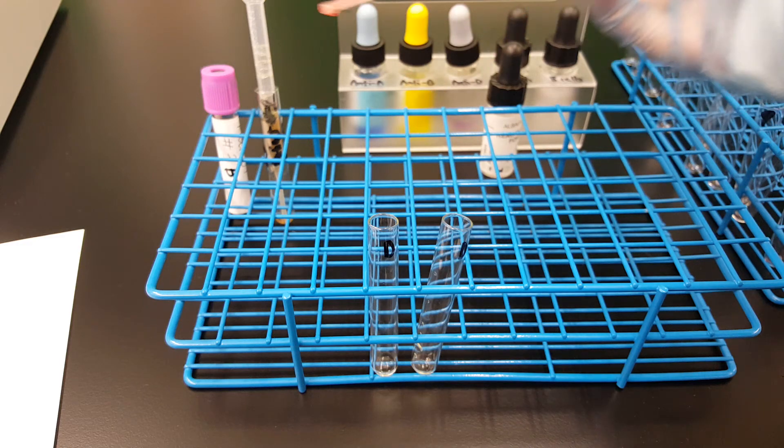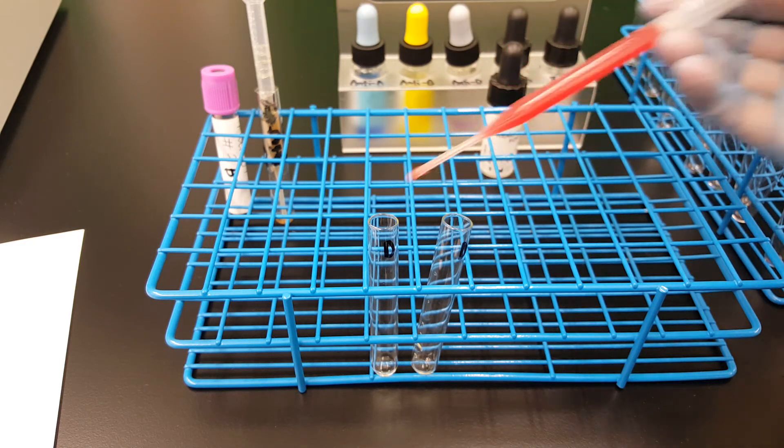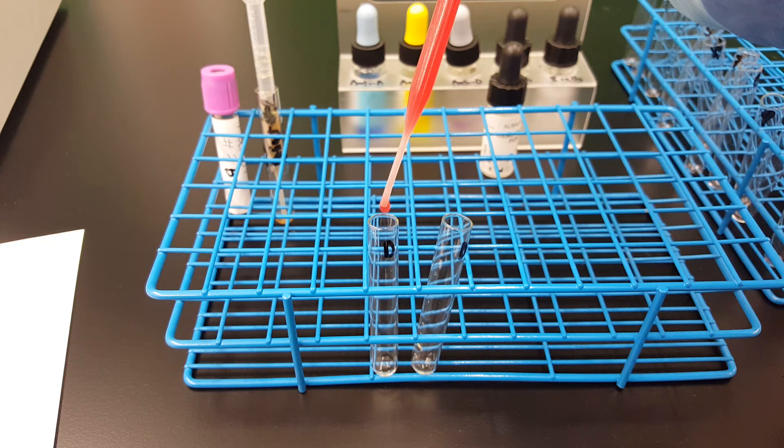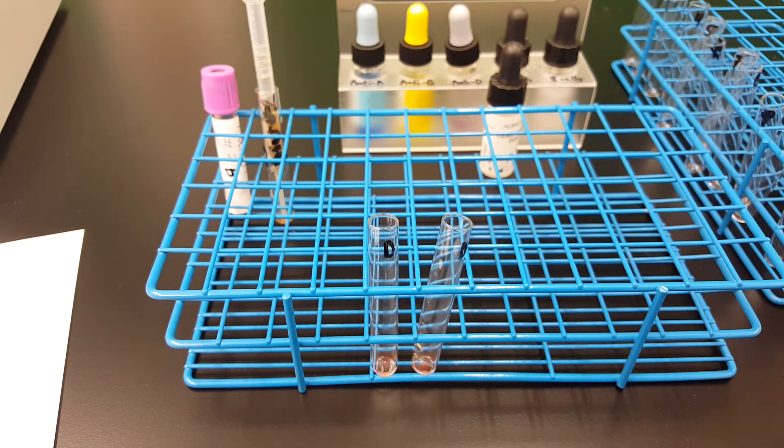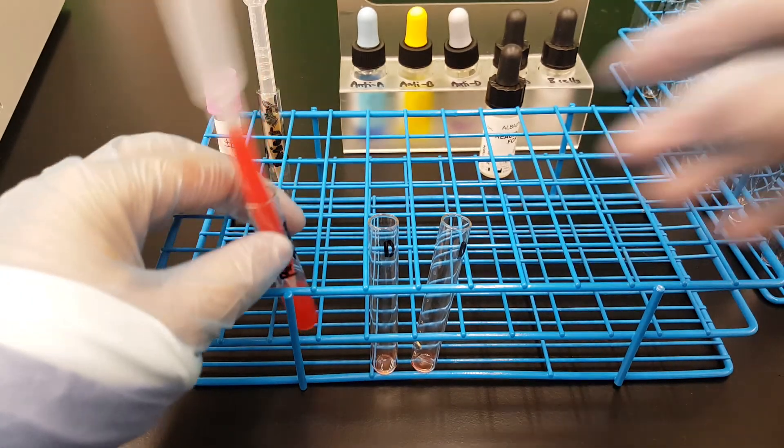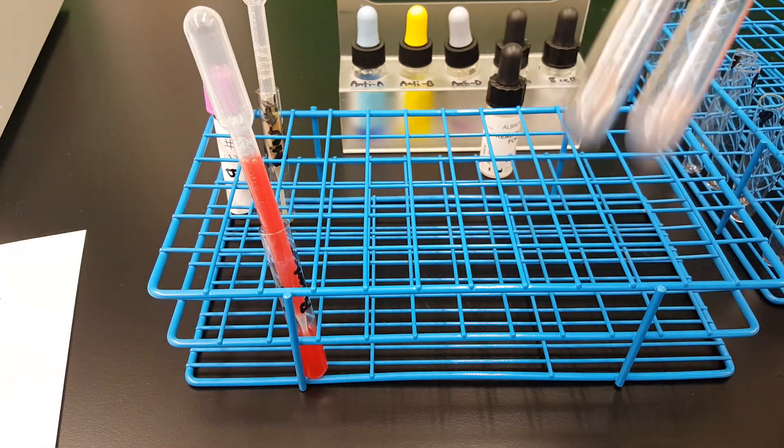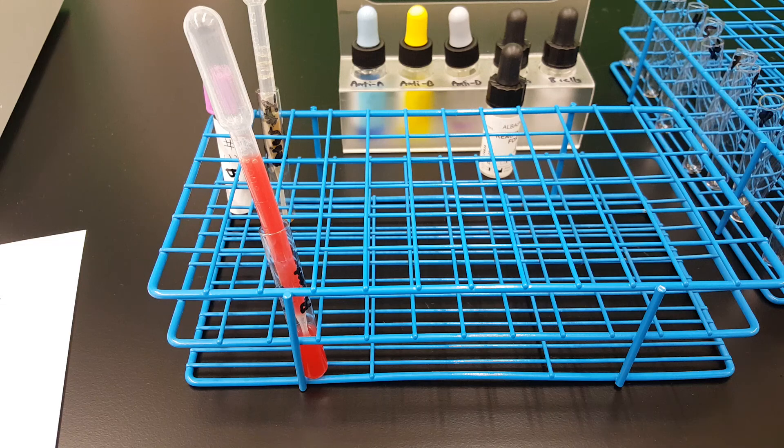So we added one drop of each of the reagents to each of the tubes. Now I'm going to add one drop of my red cell suspension to each of the tubes, and I'm going to spin them for 15 seconds.